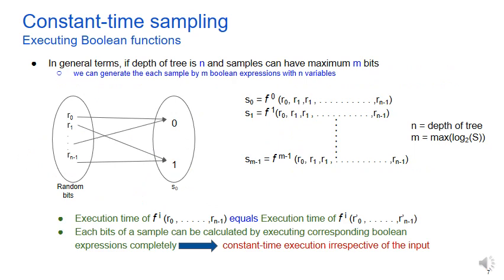In general terms, we can generate each sample by m boolean expressions with n variables. For different input random bits, any of these expressions take same time to execute. Now, we can calculate each bit of a sample by executing these expressions one by one. And this leads to a constant time sampling, as irrespective of the input, these functions take same time to execute.